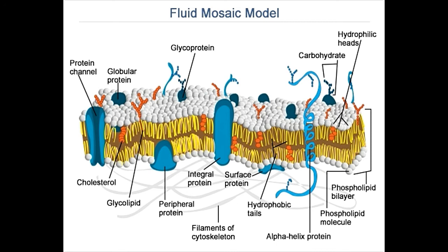While peripheral proteins are held in place to the inside of the membrane by the cytoskeleton, the integral proteins are embedded in the membrane. In the case of peripheral proteins, the interaction with the lipid bilayer is weak, as there is no interaction with the hydrophobic core of the bilayer. In the case of integral proteins, the interaction is strong.